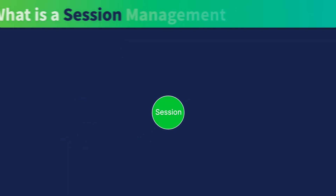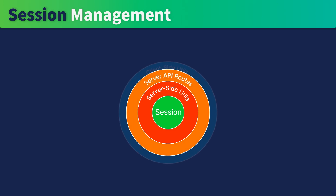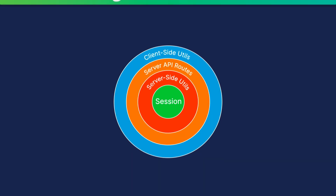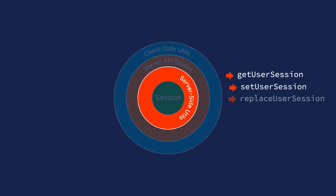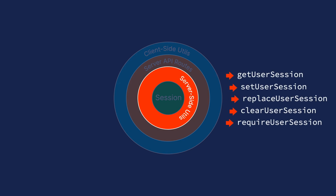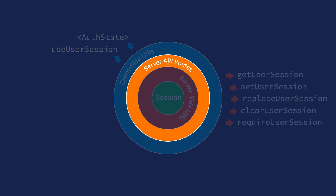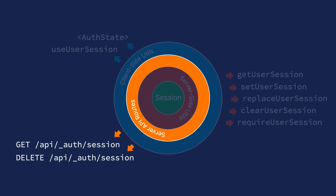Nuxt Auth Utils provides server-side utils, API routes, and client-side utils to help us manage a session. On the server side, you can use these functions to create, read, update, and delete a session. On the client side, you can read and delete a session with the auth-state component and the useUserSession composable. The component and composable get the session through API endpoints — there's a GET route and a DELETE route. We don't have to use them directly, but the client-side utils will need them.